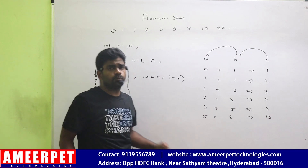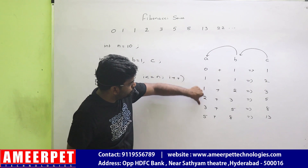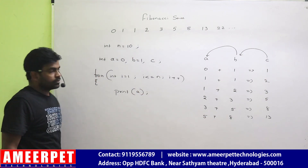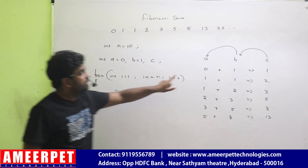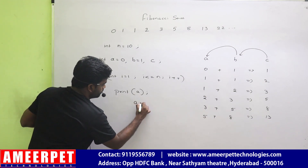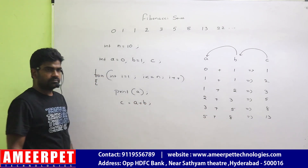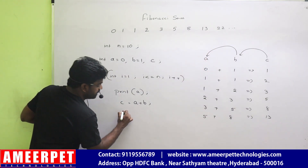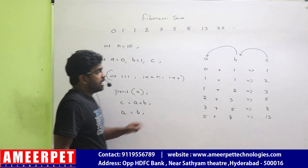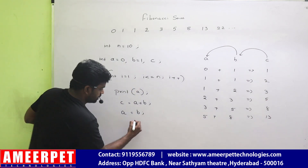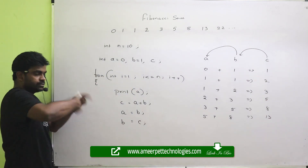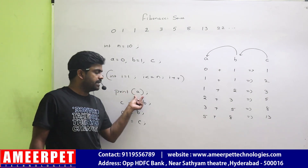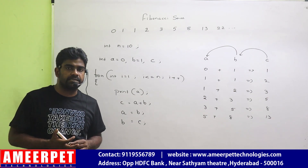So this is how we need to execute. What I need to display — display the a value. See: a value 0, 1, 1, 2, 3, 5. So first whenever we enter into the loop, we print the a value first — a value is 0. After that, adding a plus b store into c. Store the b value into a, and then store c value into b. This will repeat as many times as how many numbers you want to display. Every time we are printing that a. This is the simple way of displaying the Fibonacci series using the for loop.